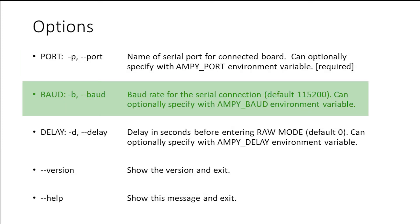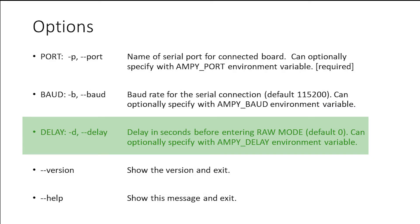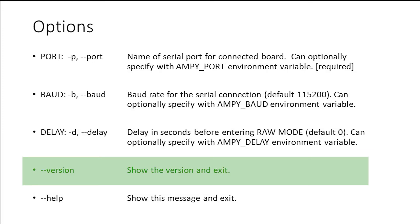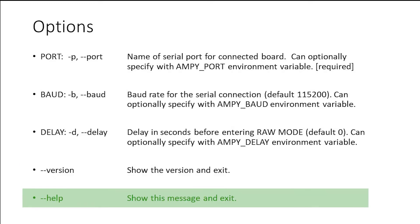The second option is baud rate — that is the baud rate at which the USB to serial converter communicates with the ESP8266 module. That can also be set using an environment variable. The delay option is used internally by ampy to enter raw mode, so we don't have to mention it in our commands. Version will display the version of ampy tool. Help we already know — we used it to display all options and commands.